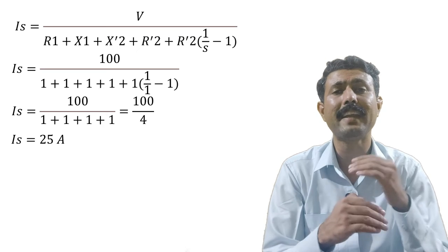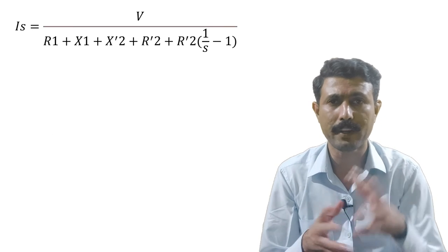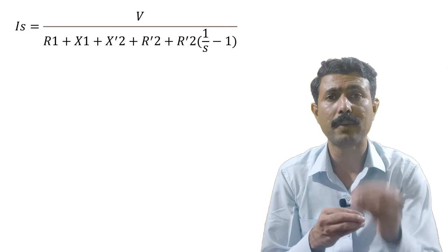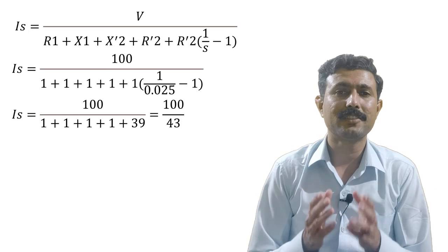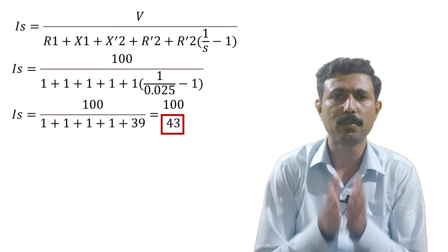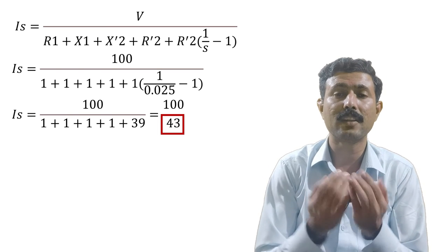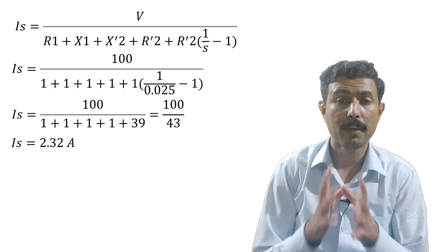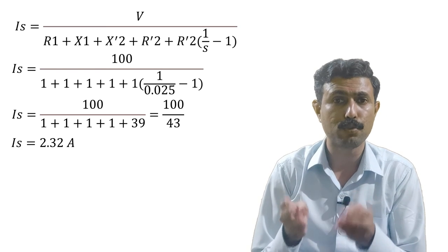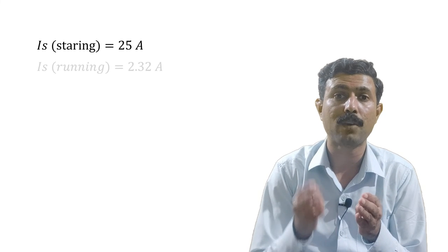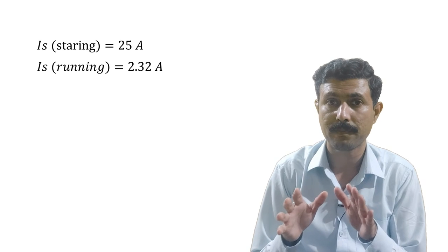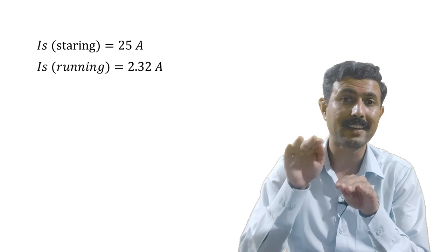Now let's say the motor gains speed and is rotating at 2.5% slip. Placing s = 0.025 into the same equation, the overall impedance becomes 43 ohms, and the current is approximately 2.32 amperes. So you can see the difference: if the rated current is around 2.3 amperes, the starting current is around 25 amperes. This clearly shows the difference between rated current and starting current, confirming why the initial current in an induction motor is so high.